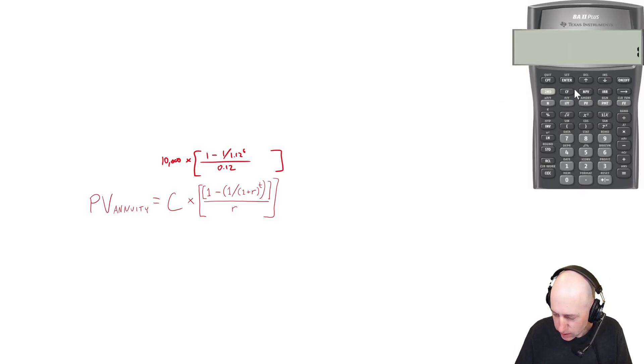Let's start with 1.12 to the sixth power. 1.12. Y to the X six, 1.97. I go one divided by that. So one over X. So now I'm at 0.5. Then I go one minus that. So I make that number negative plus one. So now I'm at 0.49. I divide by 0.12. And I multiply by 10,000. So it's 41,114, 41,114.